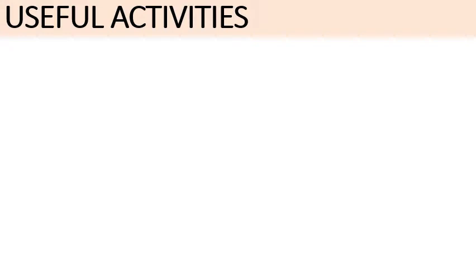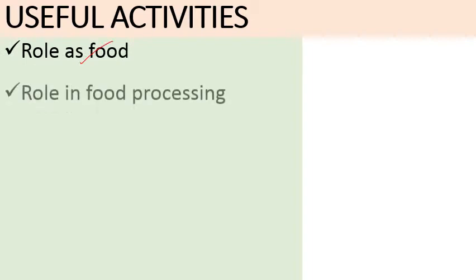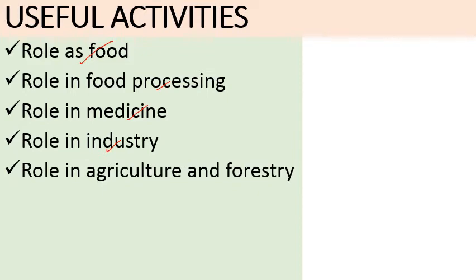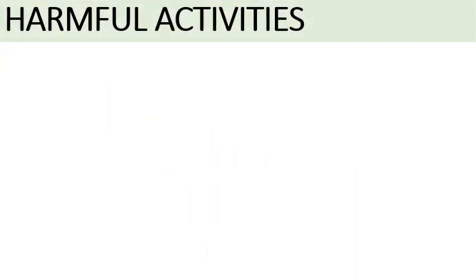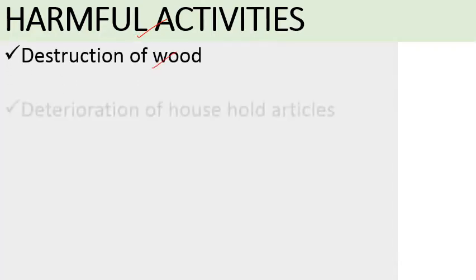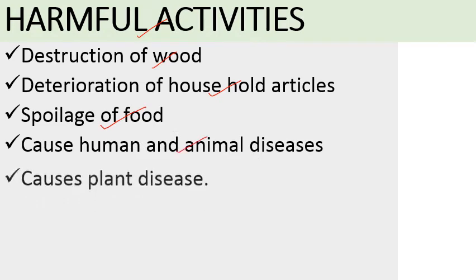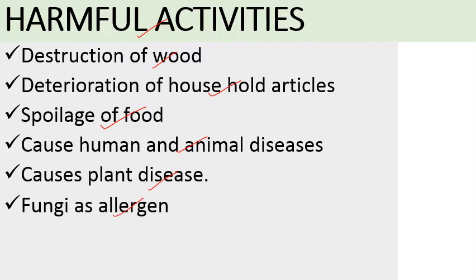Our today's learning objectives: First, we will discuss the useful activities of fungi — fungi used as food, its role in food processing, role in medicine, role in industrial products, role in agriculture and forestry, and role in research as test organisms. Next we will discuss the harmful activities of fungi — destruction of food, degradation of household articles, spoilage of food, human and animal diseases, plant diseases, and allergies in humans.